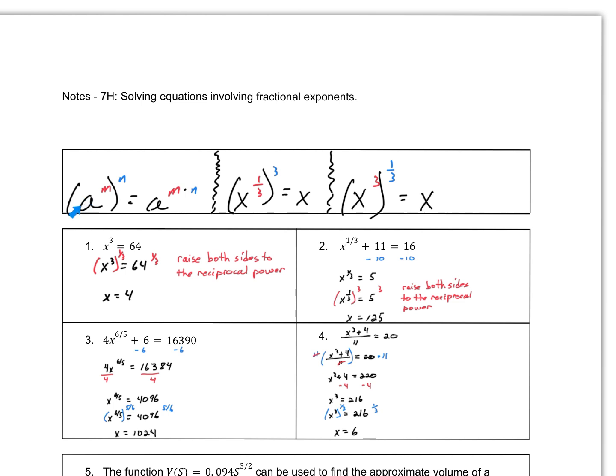Here, this A to the M to the N is an expression that shows a base with a power raised to a power. When we have power to a power, we multiply those powers — we multiply those exponents.